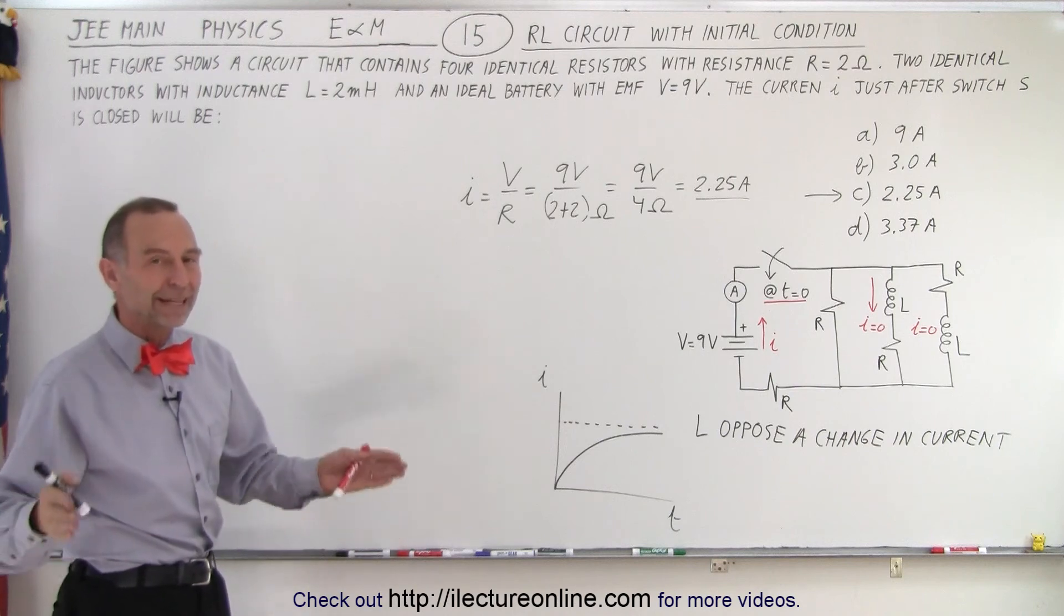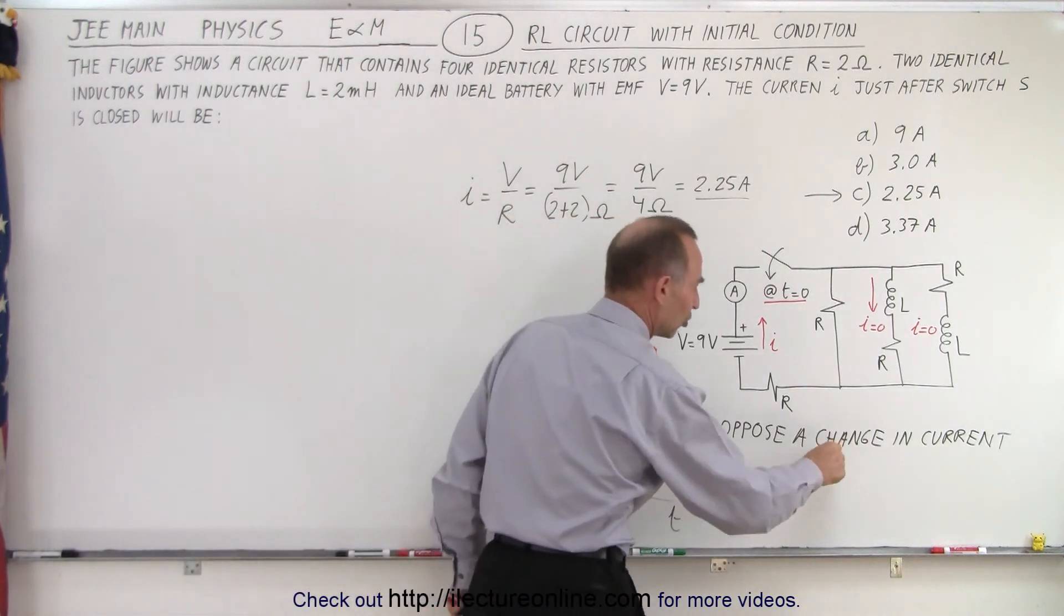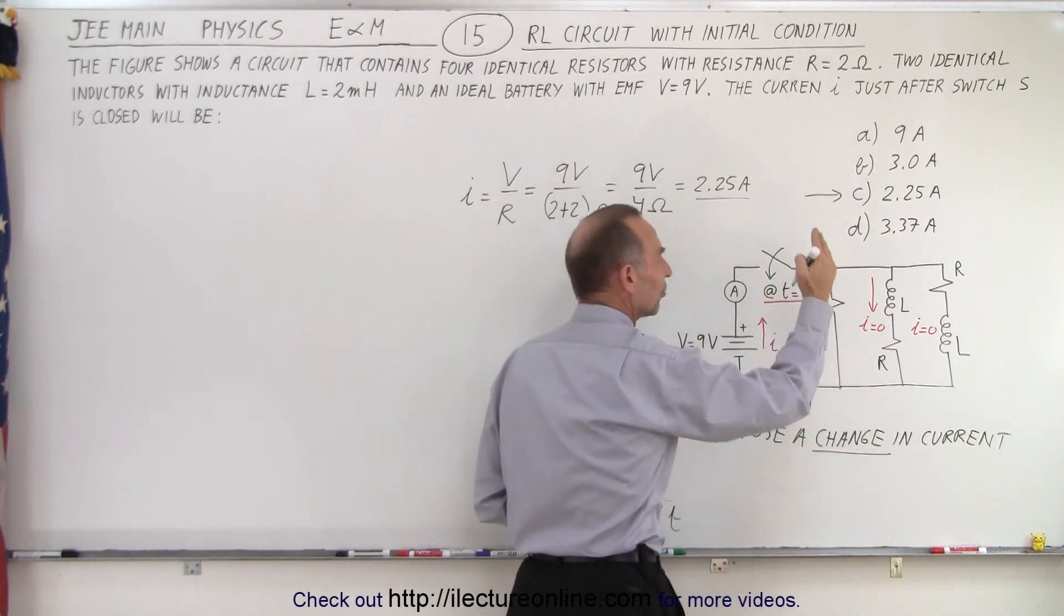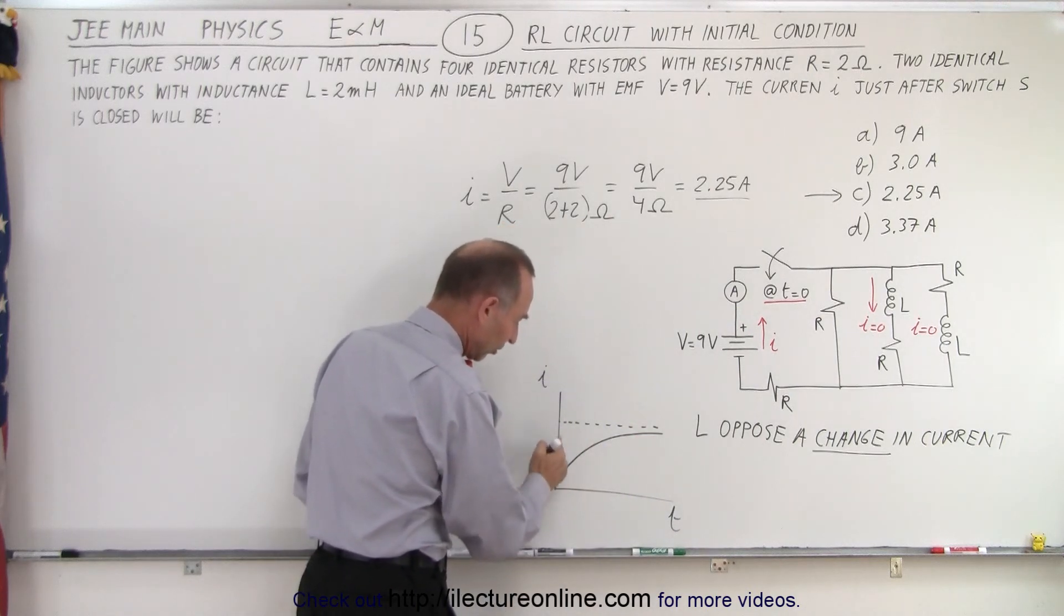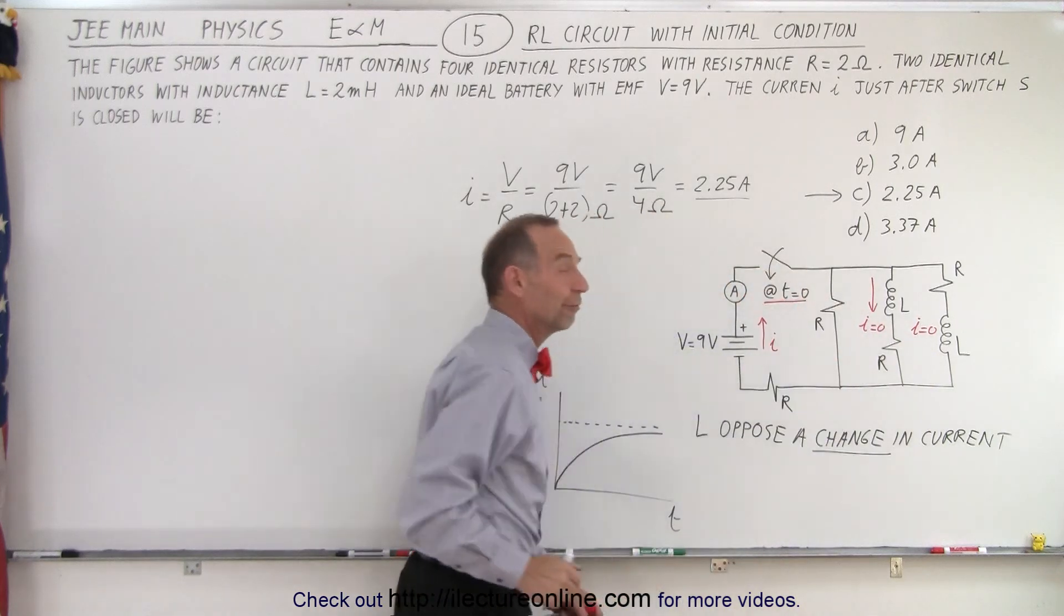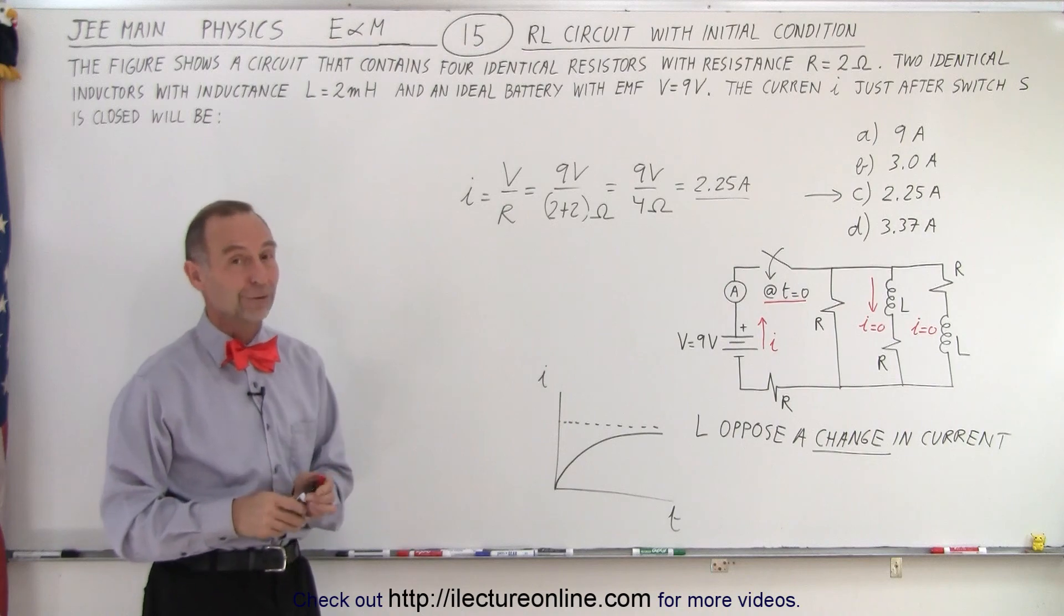It's a very simple problem if you understand the principle. The principle is that inductors oppose a change in current. That's what's important, a change. So it goes from zero to its final value in this fashion. So initially, when the switch is closed at that moment, no current through those two branches, and we simply have a very simple resistor circuit.